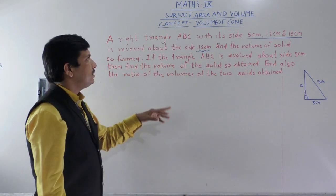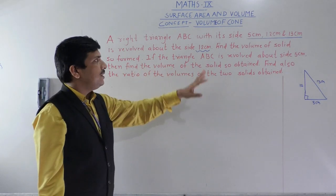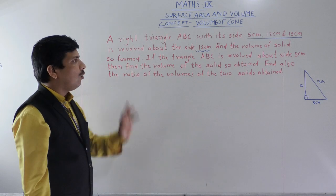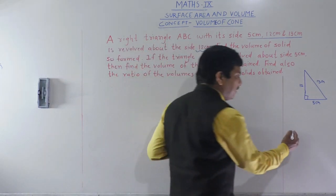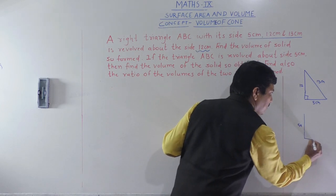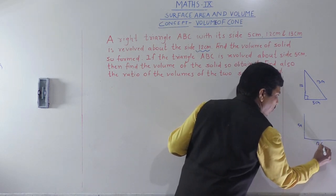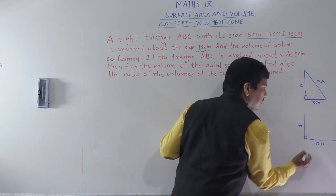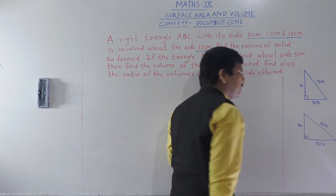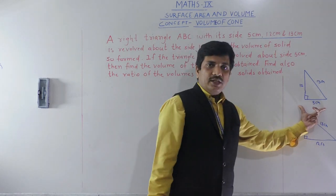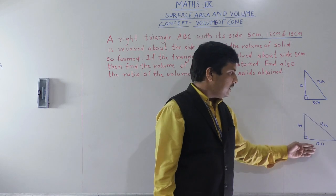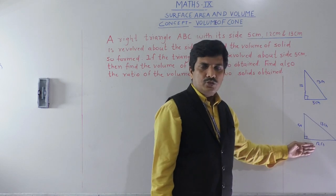Now in the second case, the triangle ABC is revolved about the side 5 cm. So now 5 cm becomes the height and 12 cm becomes the radius. In the first case, the base radius was 5 cm, and in the second case, the base radius is 12 cm.